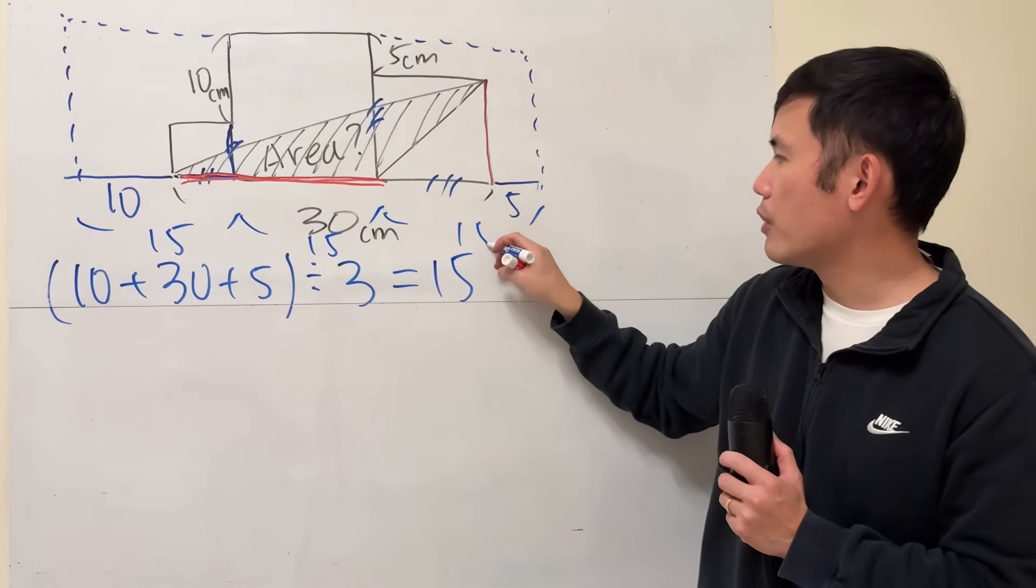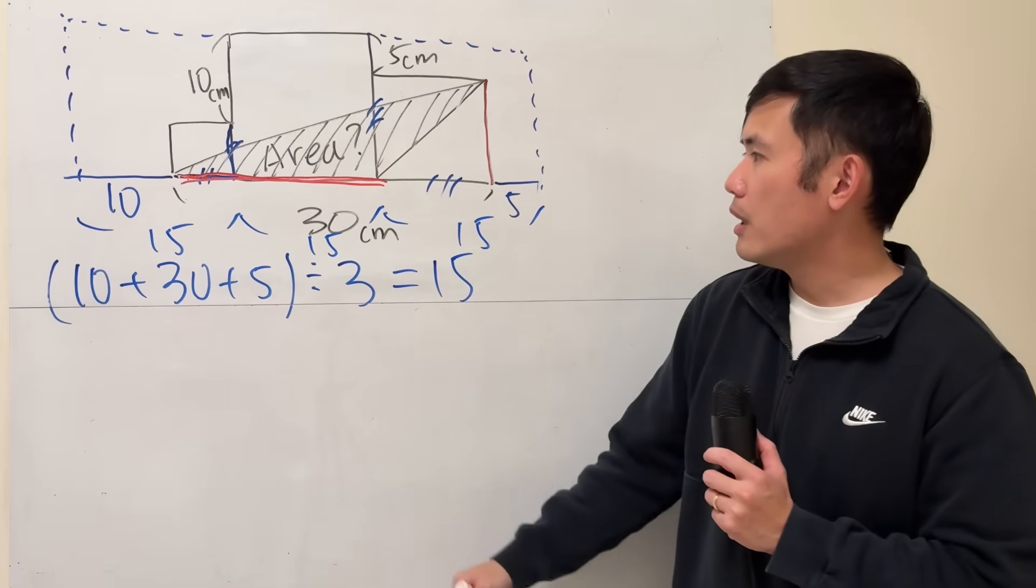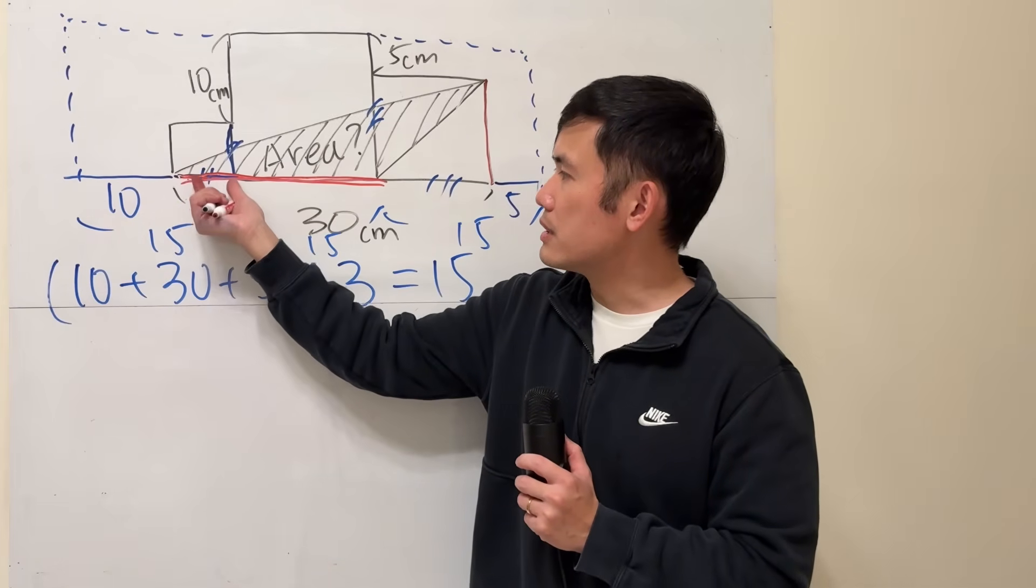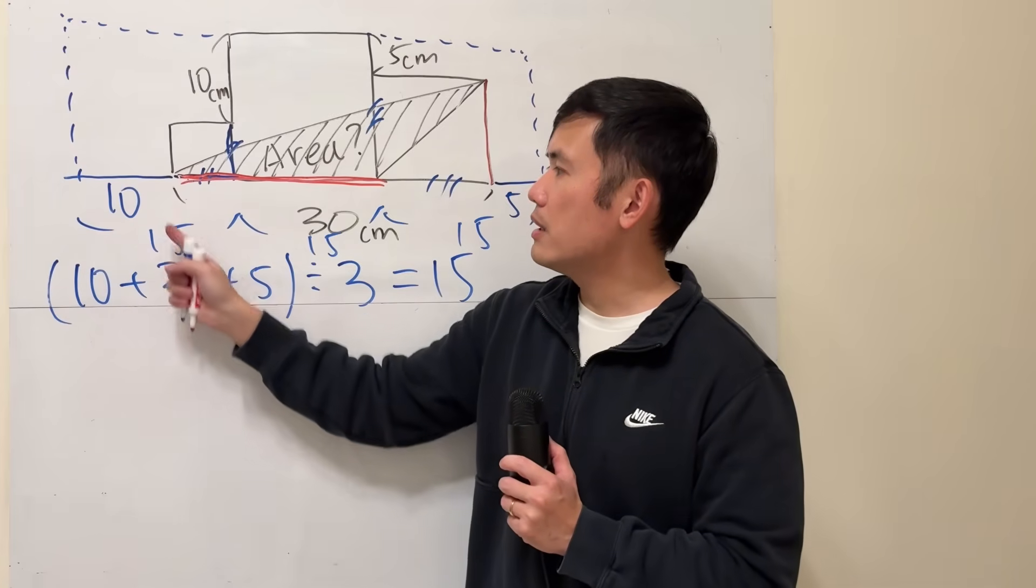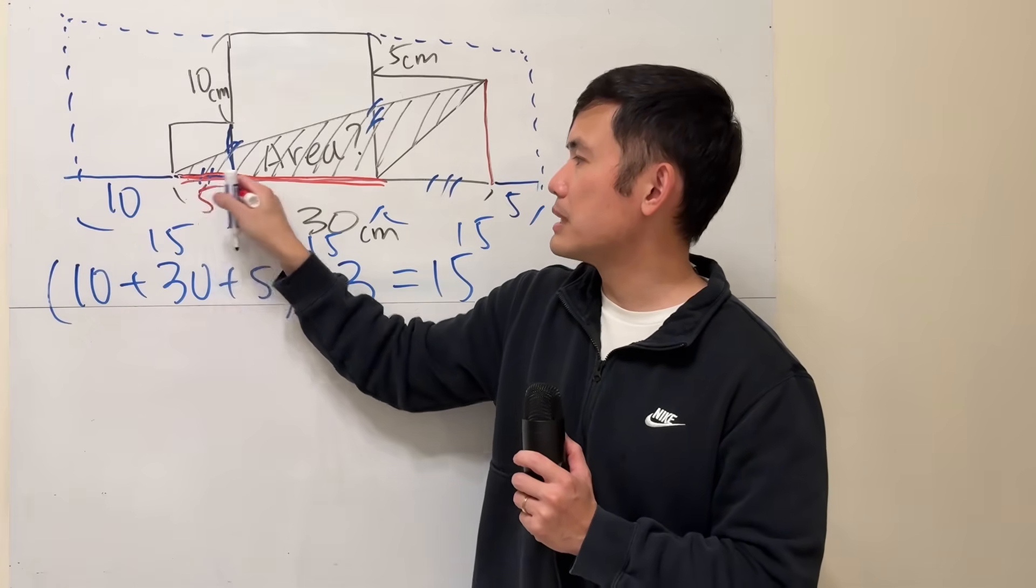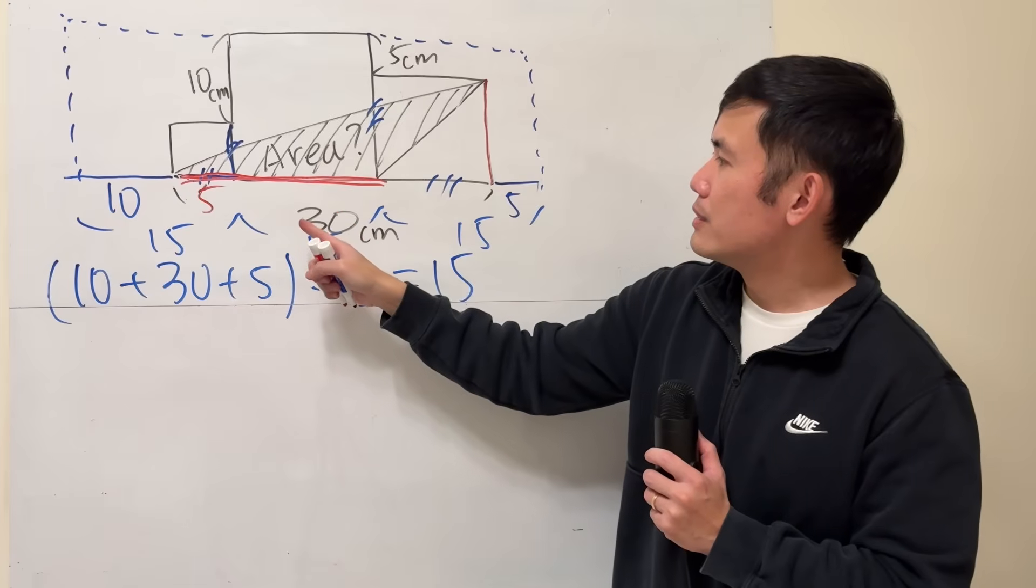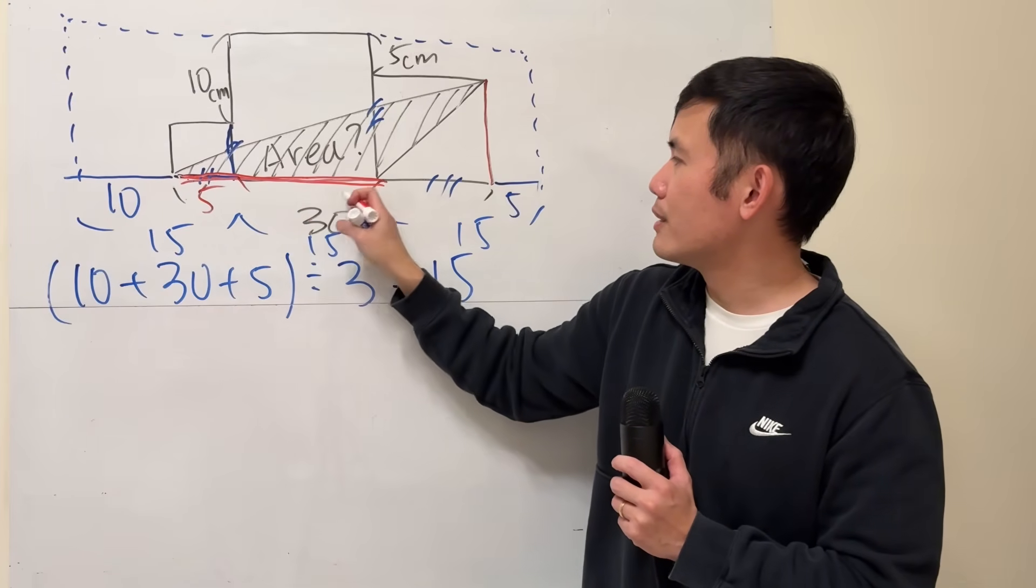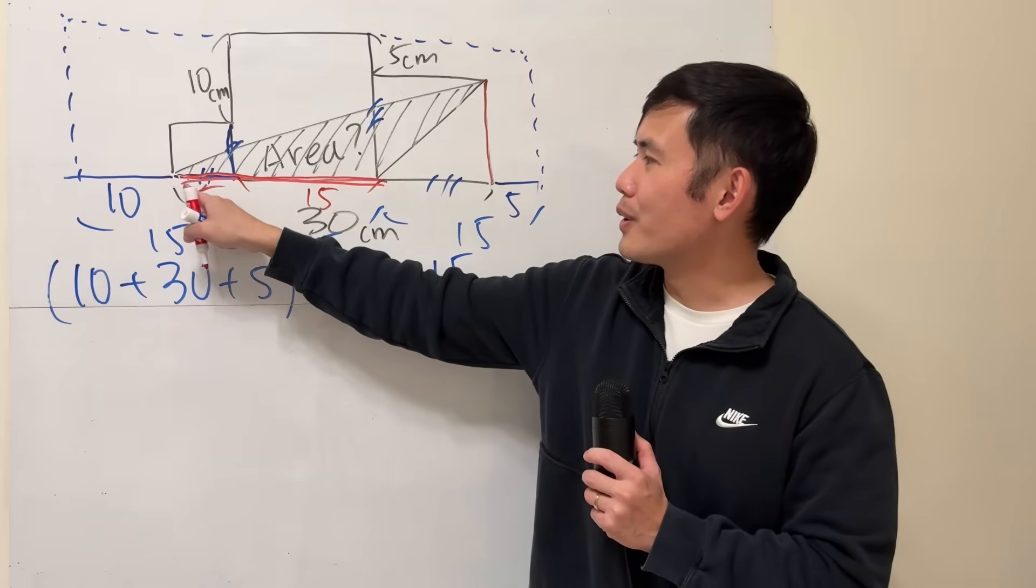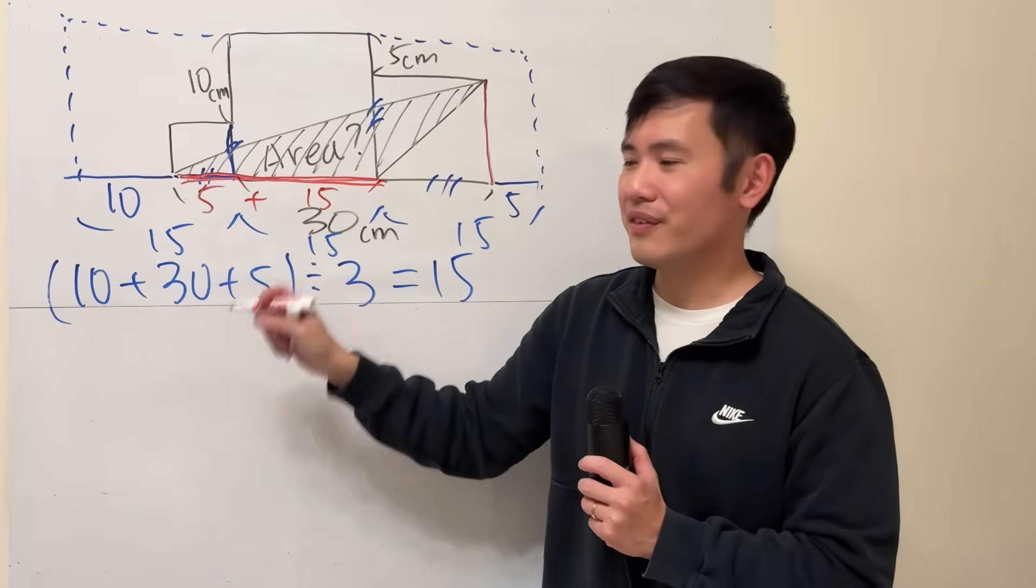That means each part is 15, that's 15, the middle is 15, and this right here is also 15. To figure out this, from here to here is 15, this is 10 already so here must be 5. To figure out this, well this middle part is 15, so the base is 15 plus 5, so base is 20.